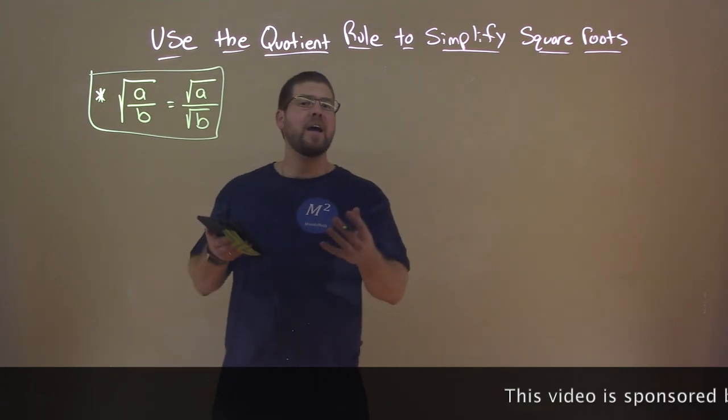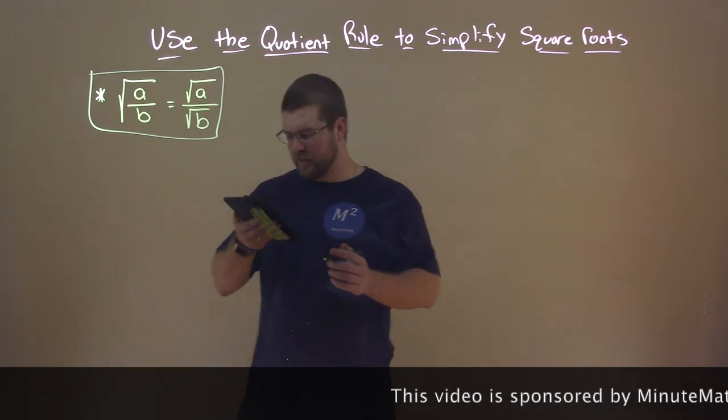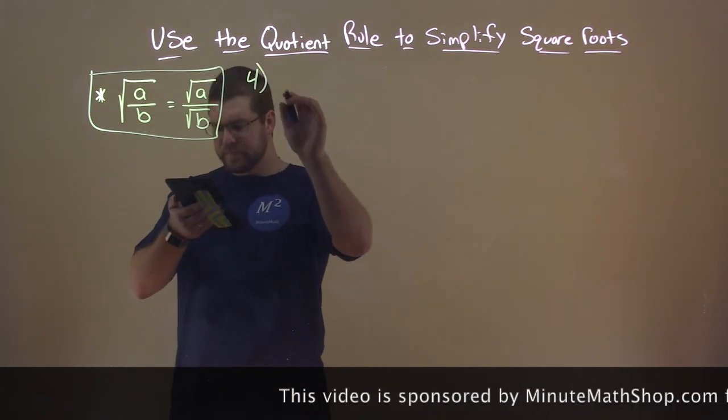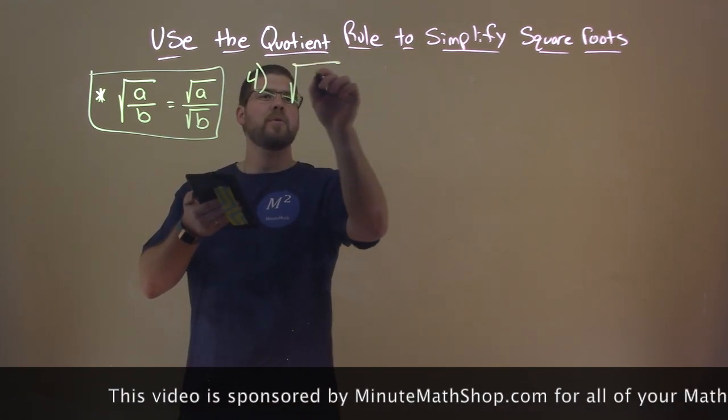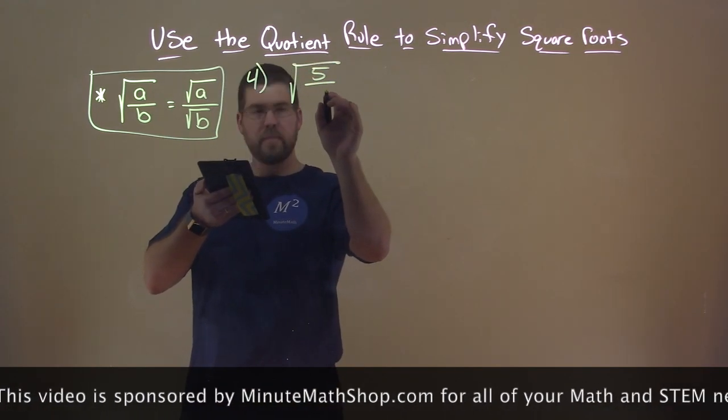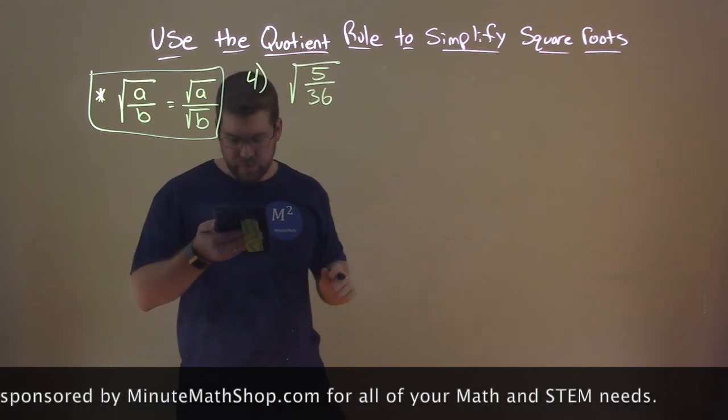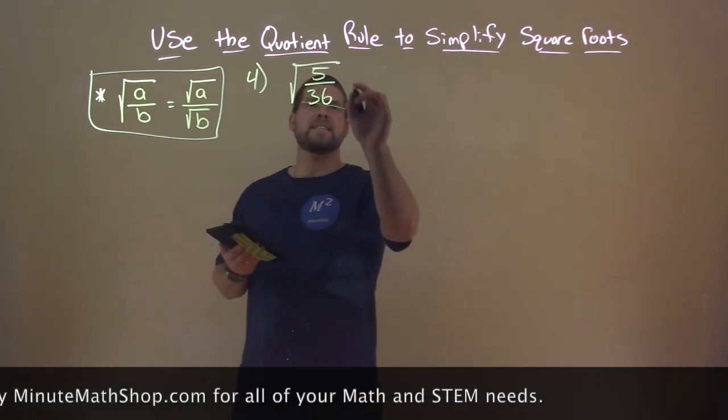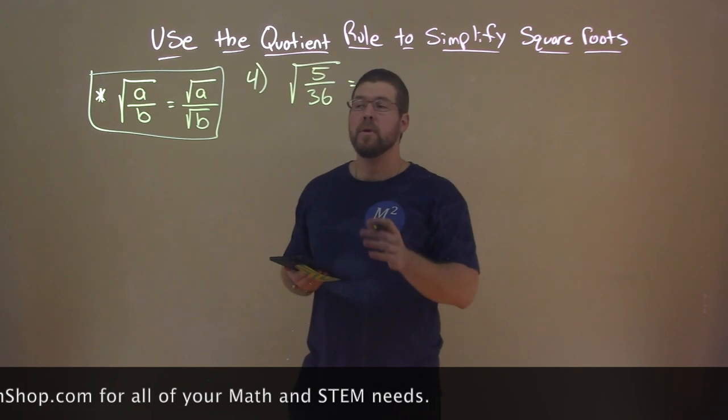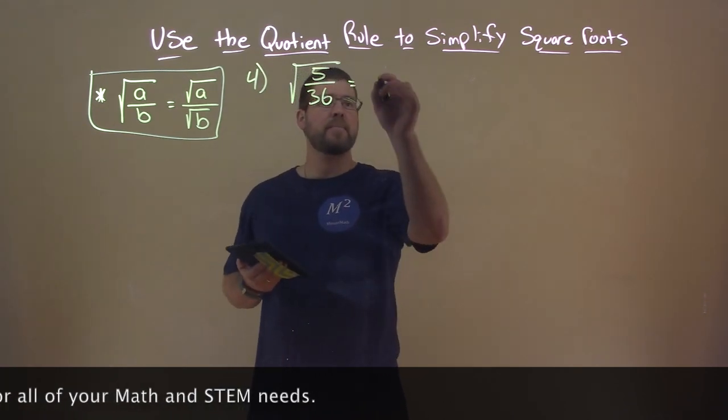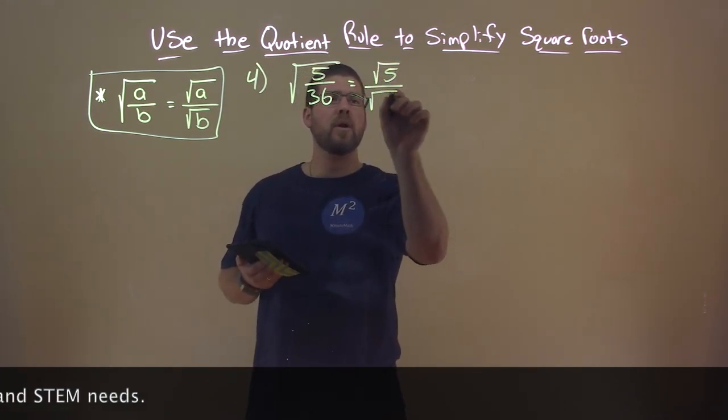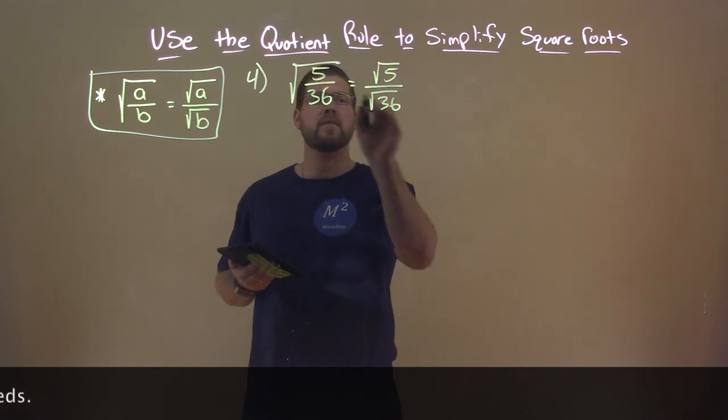And that's our quotient rule in symbolic form, okay? So let's dive in and use some examples for this. So I'm going to do example four here. And what if we had the square root of 5 over 36? Well, our quotient rule tells us that we can take the square root of each number individually.